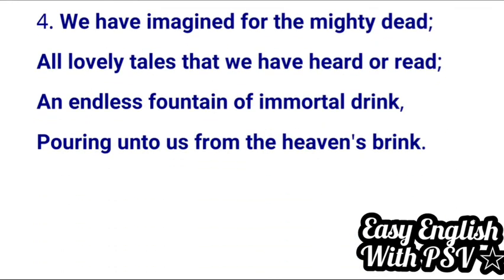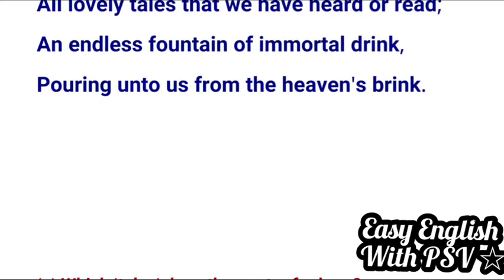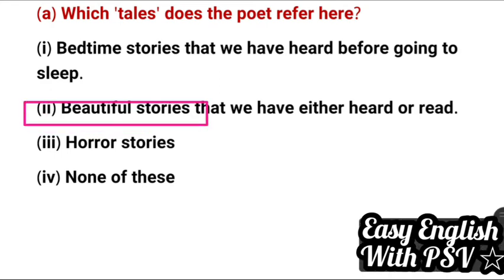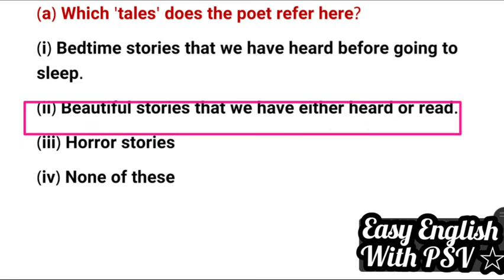Fourth extract: 'We have imagined for the mighty dead; all lovely tales that we have heard or read; an endless fountain of immortal drink, pouring unto us from the heaven's brink.' Question 1: Which tales does the poet refer to here? Options: bedtime stories before going to sleep, beautiful stories that we have either heard or read, horror stories, none of these. Correct answer: beautiful stories that we have either heard or read.